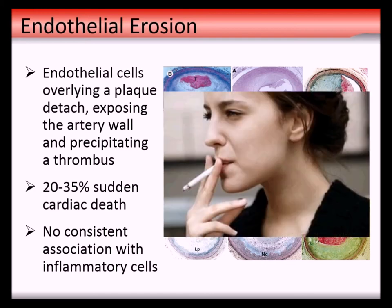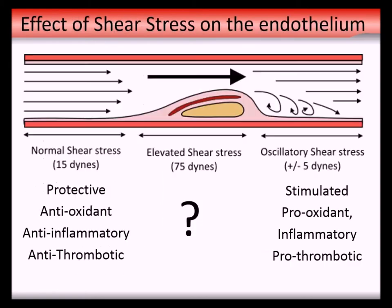So why am I interested in smoking? The people who are more likely to suffer from this kind of erosion-based heart attack are generally smokers, generally female, and generally younger. In the 40-to-55-year-old female age group who die of a heart attack, more than half have died of an erosion rather than a plaque rupture.